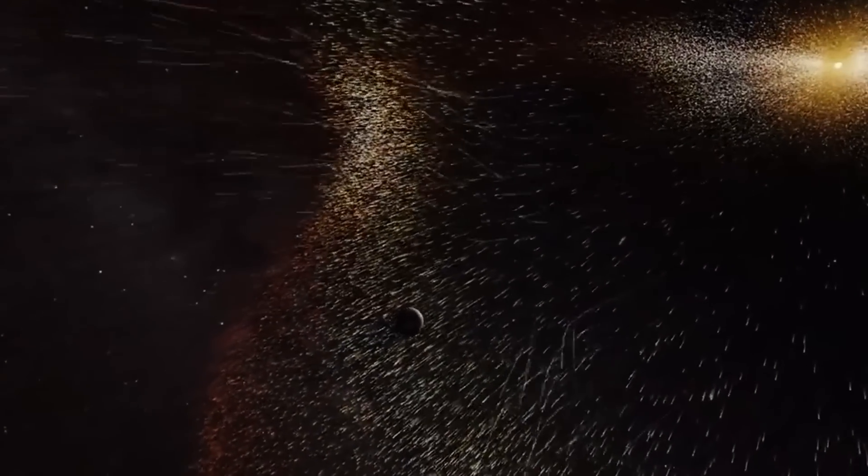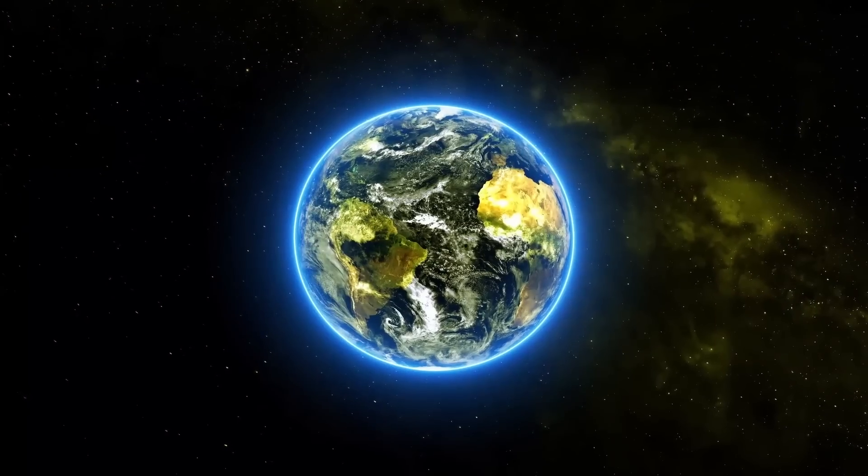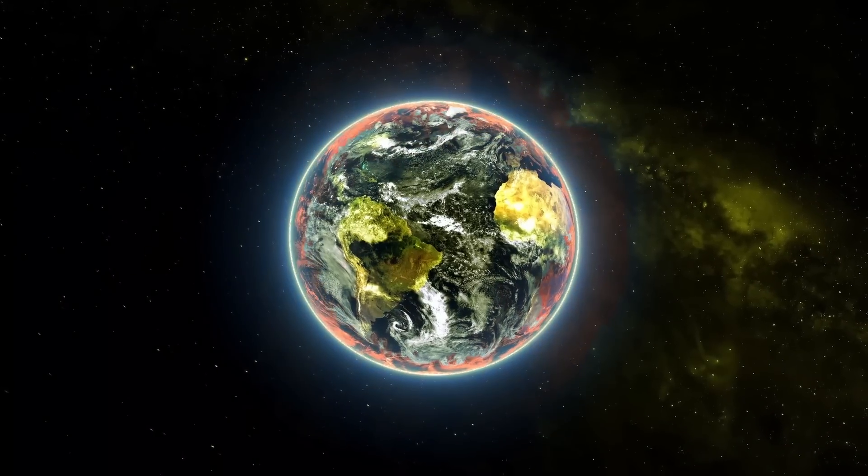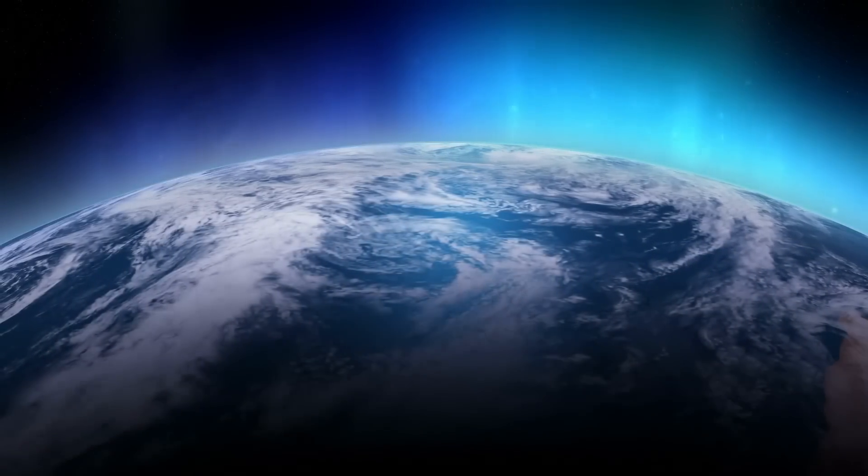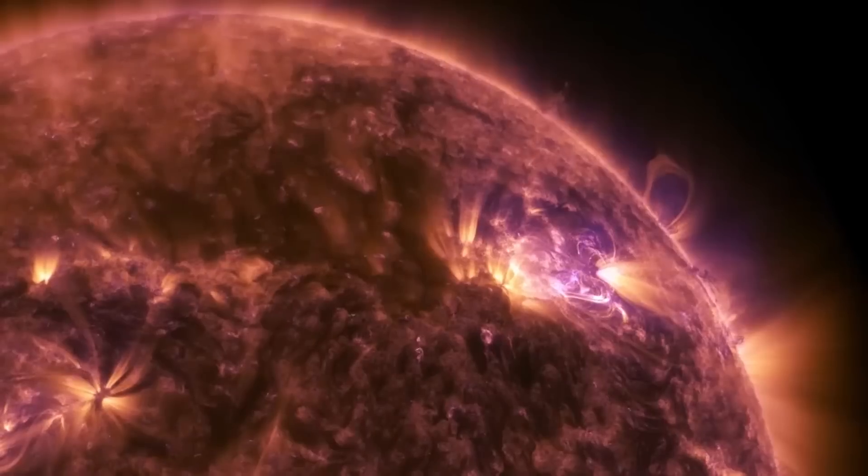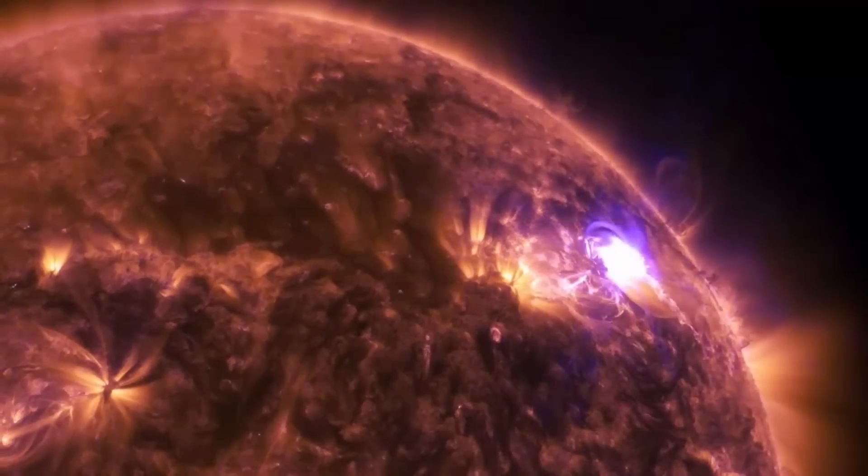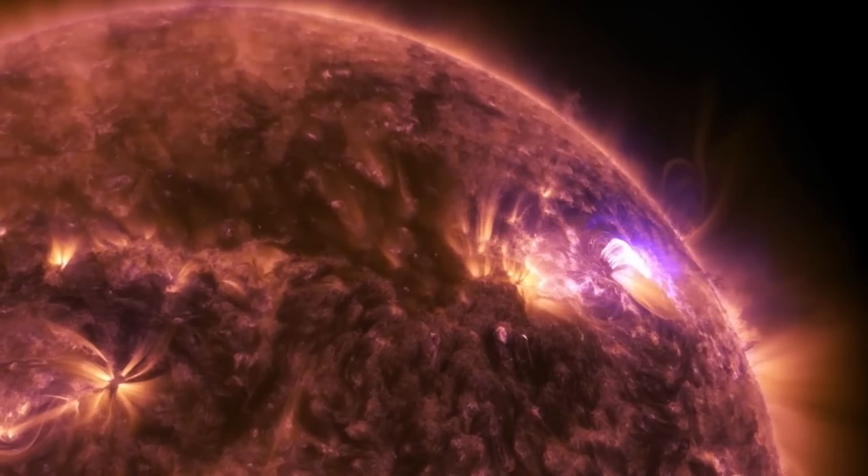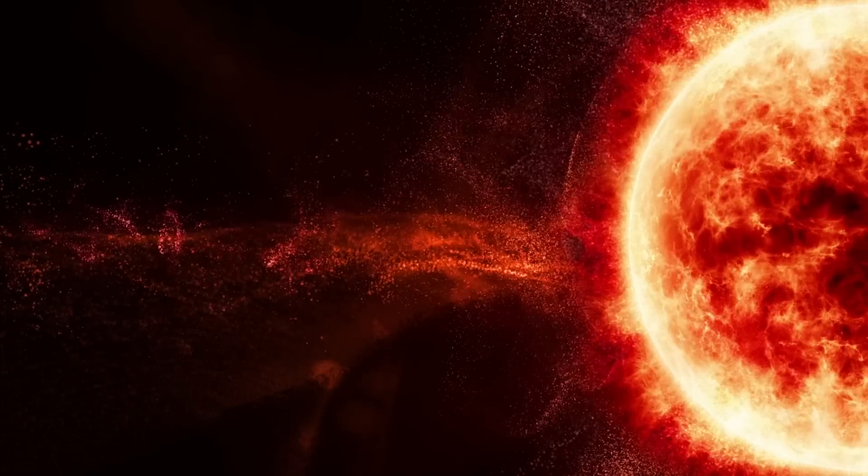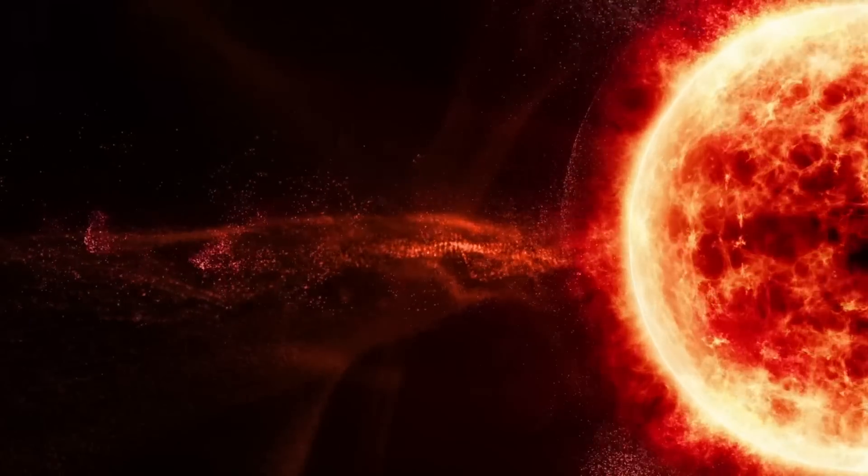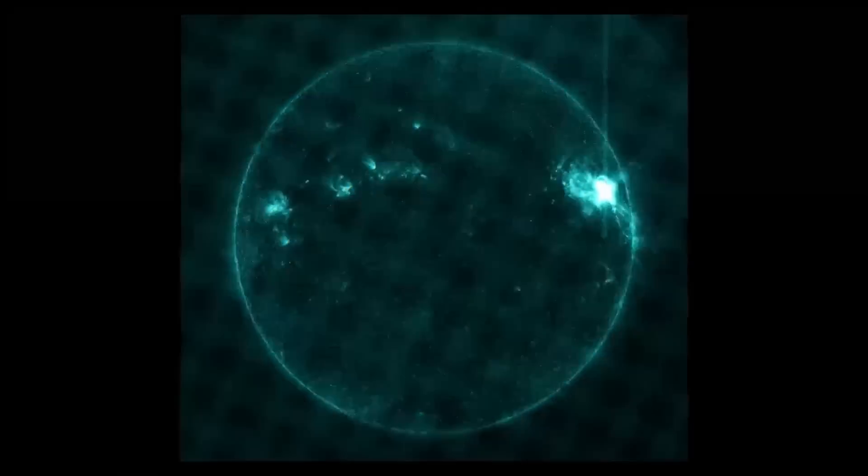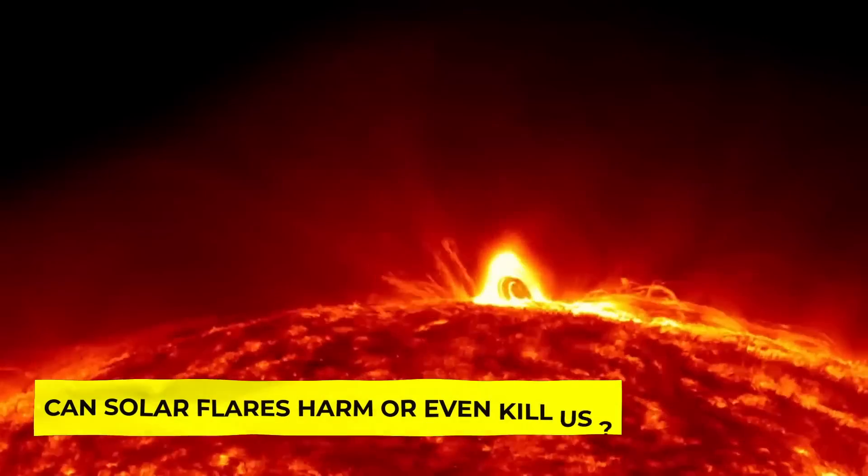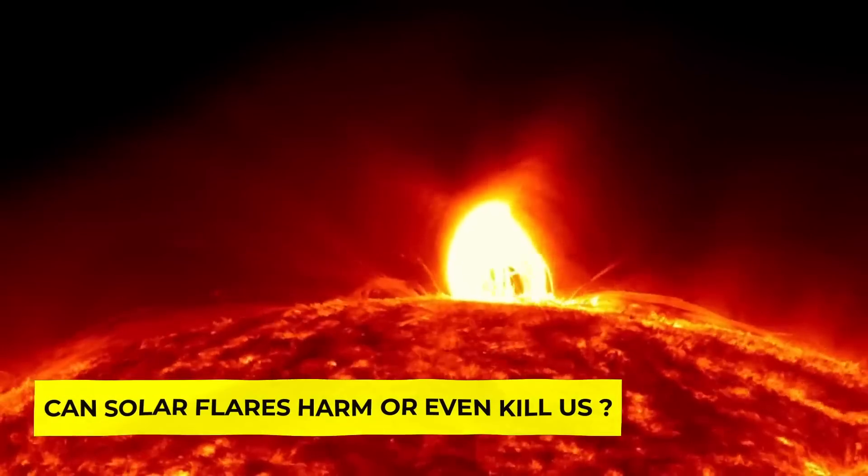Some solar flares have already made it to Earth and more are on their way. These have the potential to disrupt the atmosphere, which in some polar regions can result in the spectacular Aurora Borealis. A solar flare is essentially a large, powerful radiation burst that emerges from the Sun's surface. These flares, which are some of the most powerful occurrences to occur in our solar system, are caused by the release of magnetic energy.